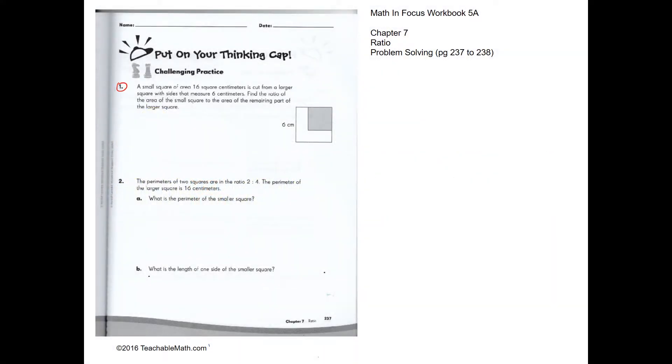Challenging practice. Question 1. A small square of area 16 square centimeters is cut from a larger square with sides that measure 6 centimeters. We have to find the ratio of the area of the small square to the area of the remaining part.